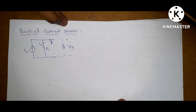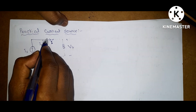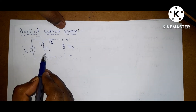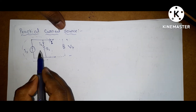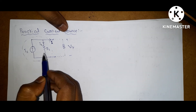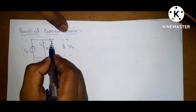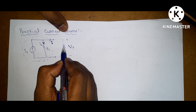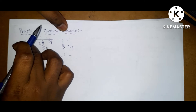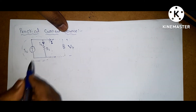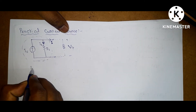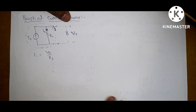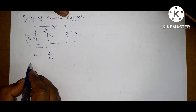Next is the practical current source. In a practical current source, the resistance is connected across — that is, in parallel with — the current source. The voltage across the resistor equals the terminal voltage Vt because all three elements are connected in parallel, so voltage is constant. Here I1 equals Vt divided by Rs.